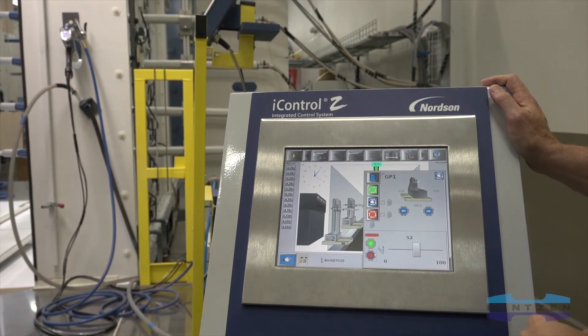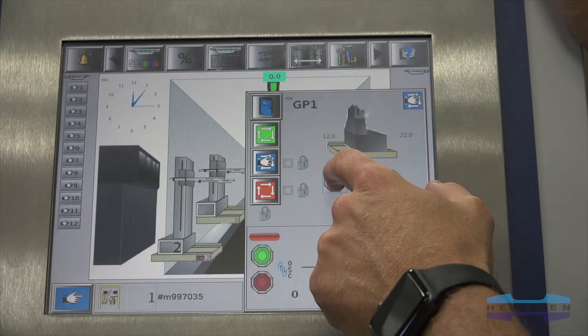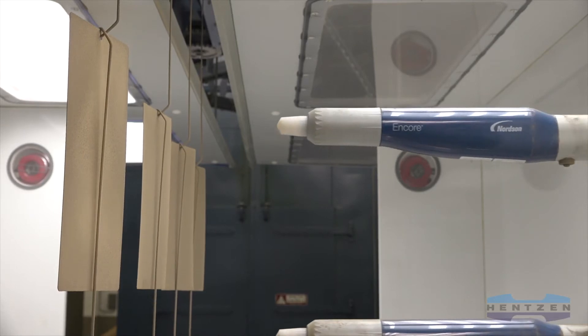As the gun-to-part discharge gets smaller, the current load will increase. As the current load reaches the limit set point, the KV will fall rapidly. This abrupt fall of the KV is what helps prevent back ionization when working close to the substrate.